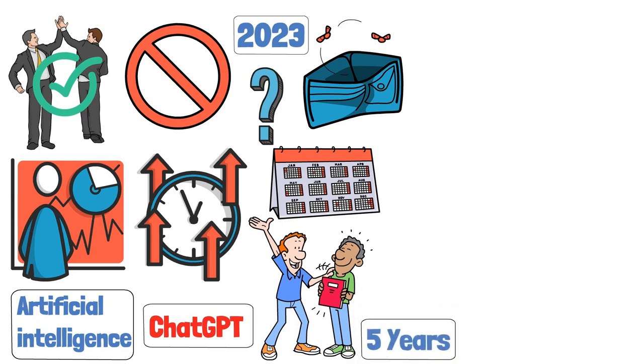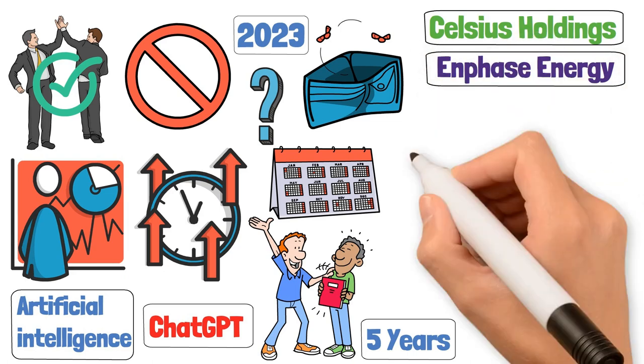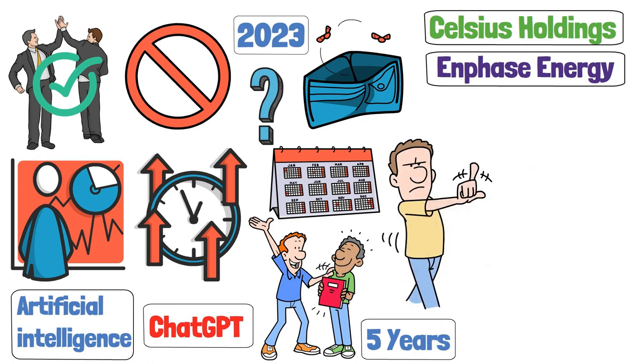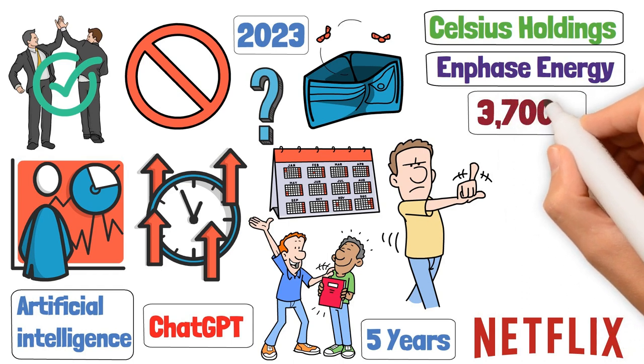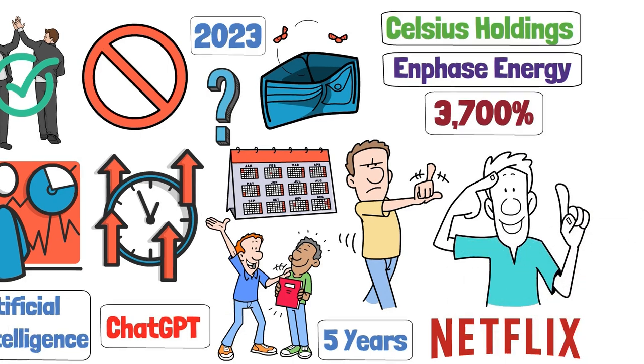Take the past five years, for example. Companies like Celsius Holdings and Enphase Energy have delivered returns that are nothing short of astronomical, proving that with the right strategy, you can indeed win big. And let's not forget the titans of the past decade. Netflix, a company that transformed from mailing DVDs to dominating the streaming world, saw its stock skyrocket over 3,700%. It's a clear demonstration that understanding market trends and investing in innovation pays off.